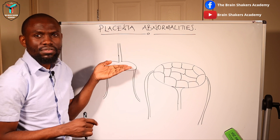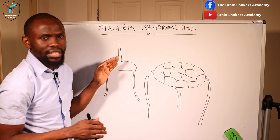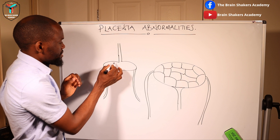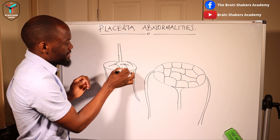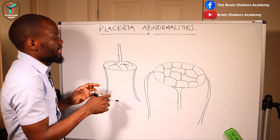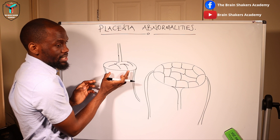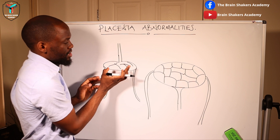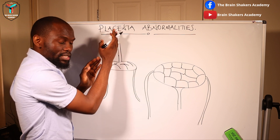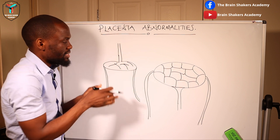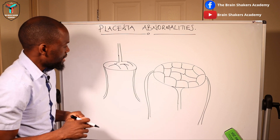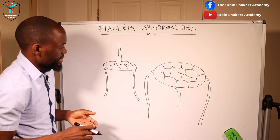The fetal surface is going to look shiny and you have blood vessels there that you can visibly see, showing that from the placenta side there has been a lot supplied to the fetus in terms of oxygenation and nutrition.